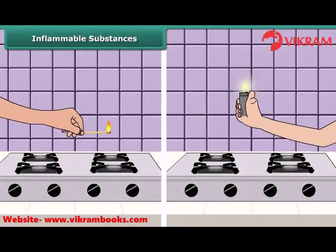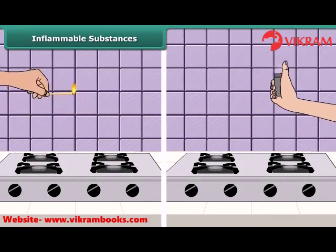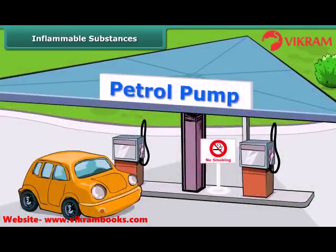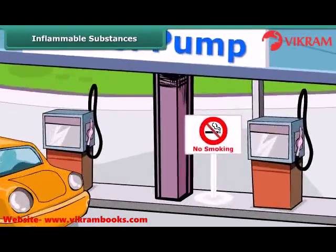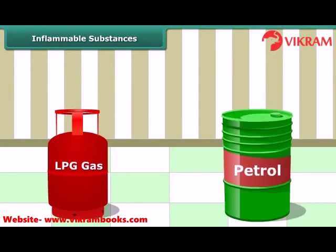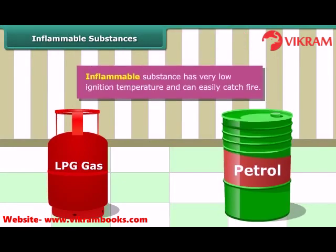Your mother would have told you to keep a burning matchstick or lighter away from the LPG gas stove in the kitchen, because LPG catches fire very easily. Similarly, you must have seen a no-smoking sign board at petrol pumps. It is because petrol also catches fire very easily, and therefore it is advisable not to smoke at petrol pumps. Substances like LPG and petrol are inflammable because they have low ignition temperature, due to which they readily catch fire.